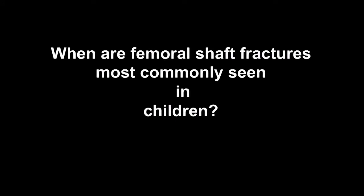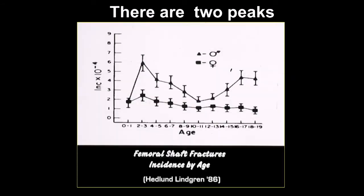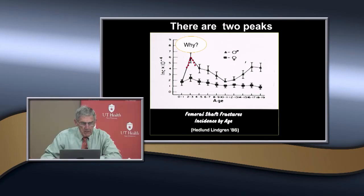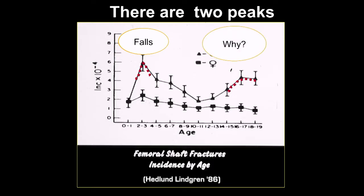Femoral shaft fractures are different in children. There are two peaks in childhood incidence: one early peak around age two to five, when kids are just starting to walk, have limited balance, and sustain falls — so we see a lot of spiral fractures from twisting injuries in this age group. The later peak involves high-energy mechanisms like being hit by a car, sports injuries, or motor vehicle accidents.